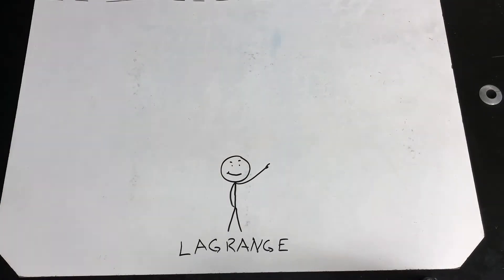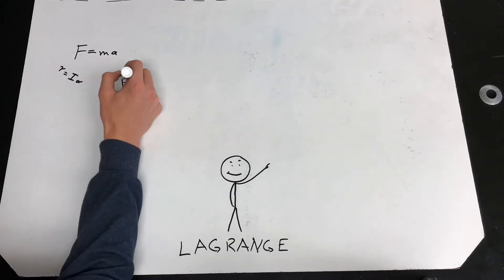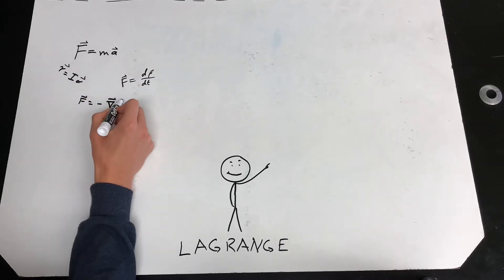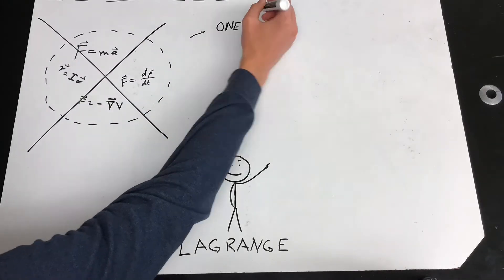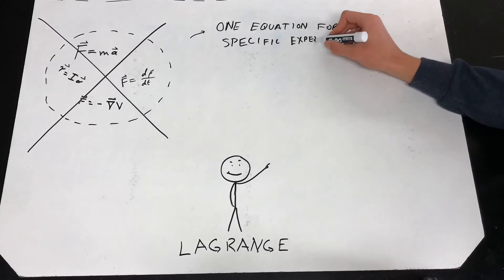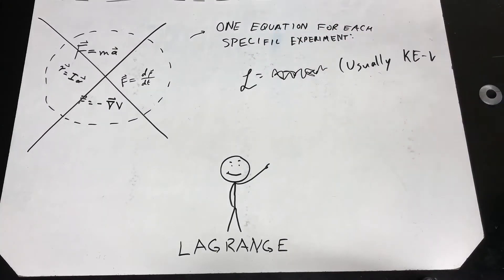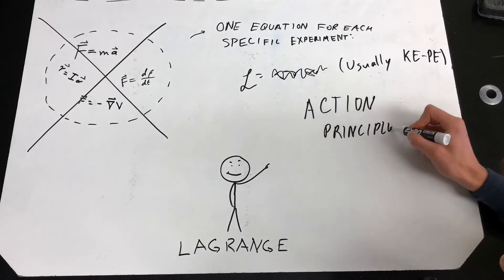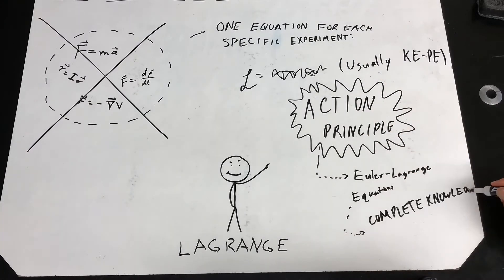Then along came Lagrange. He found that we don't need all those arbitrary equations from Newton. There is one equation for every experiment that tells us everything we could ever want. Unsurprisingly, he called this equation the Lagrangian. His theory, based on something called the action principle, is used absolutely everywhere in physics today.